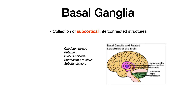Specifically, those structures include the caudate and the putamen — together called the striatum — the globus pallidus, which has two subcomponents: the globus pallidus internus and the globus pallidus externus, the subthalamic nucleus, and the substantia nigra. All of these parts together make up the basal ganglia.